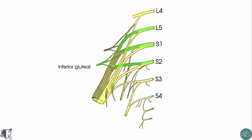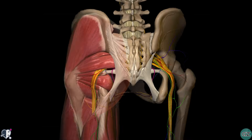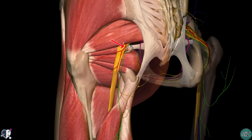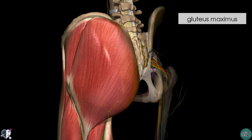The inferior gluteal nerve originates from spinal nerve roots L5, S1 and S2. This nerve leaves the pelvis via the greater sciatic foramen, entering the gluteal region inferiorly to the piriformis muscle. It is accompanied by the inferior gluteal artery and vein for much of its course. Its motor function is to innervate the gluteus maximus muscle.